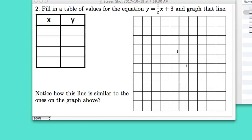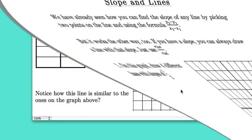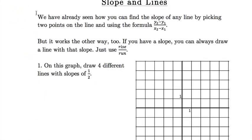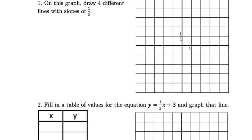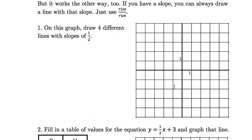So we just finished looking at the first question in this worksheet on slopes and lines, and we looked at drawing four different lines with slopes of one-half and you saw what those looked like. All four lines were parallel to each other. They all had a slope of one-half. They rose one and ran two, with a rise over run of one over two.